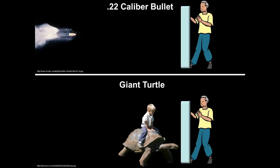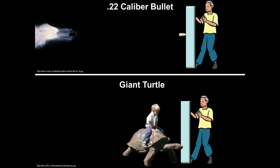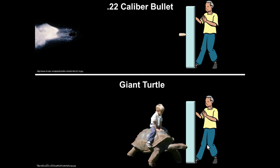When two objects have the same momentum, they interact with the physical world in the same way. If we have a giant steel plate and the bullet dings into it, knocking it backward a little — then the turtle walks forward and dings into that plate — it would knock it back the same amount. The effect would be the same because the bullet and the turtle had the same momentum.